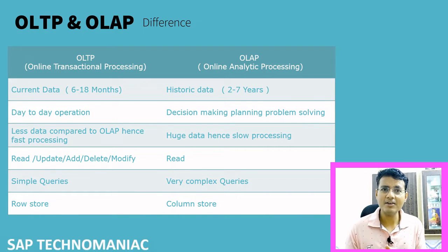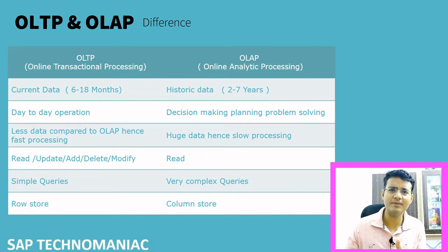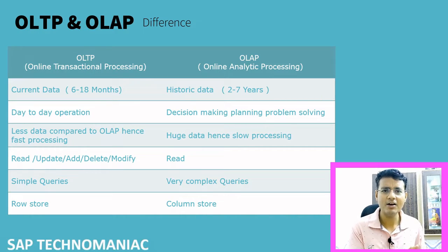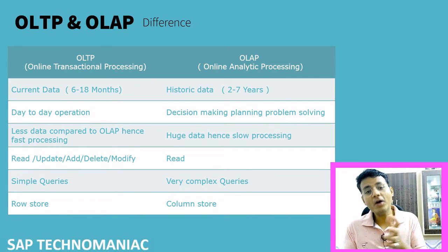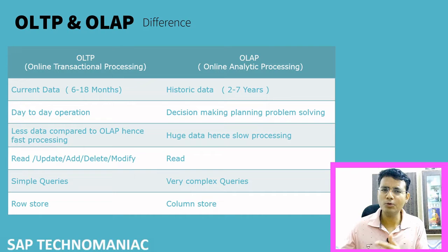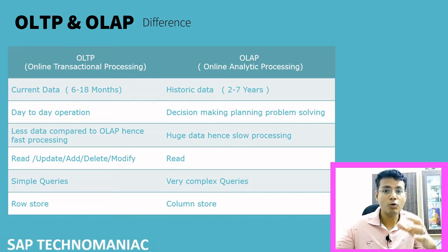And OLAP is the data warehouse database — BW related data — where we have a lot of data and where we are processing the data. The difference is that OLTP has transactional data, maybe one year or max two or three years of data. But in OLAP, we have historical data — a lot of data to analyze, from 10 to 15 years, even 20 years of data warehouse, where we are having a huge amount of data.